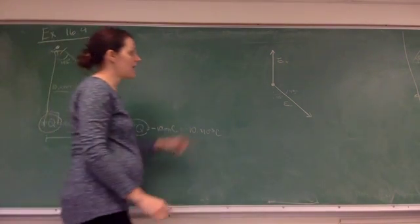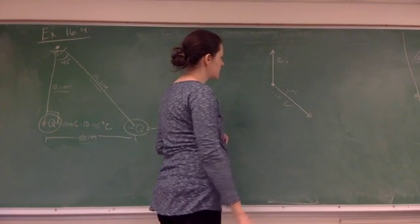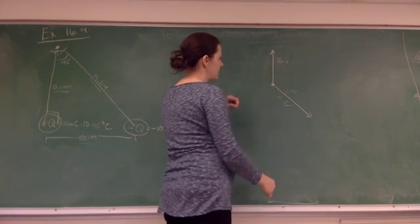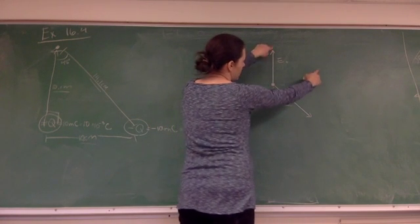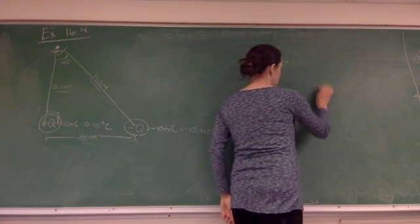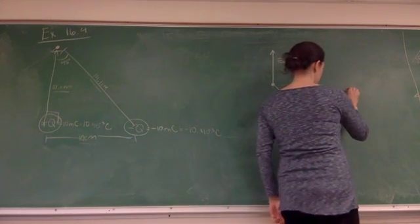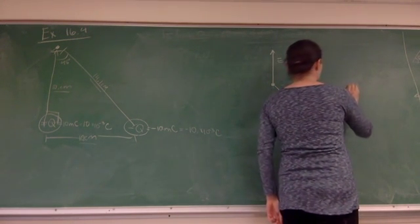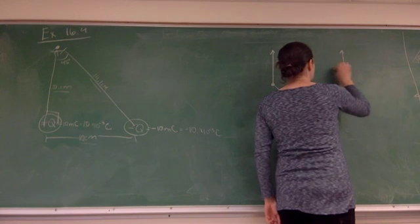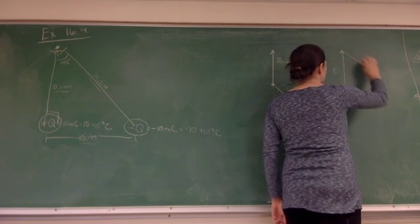In order to have these things add like vectors in a graphical way, we want to add them head to tail. So I'm going to imagine just picking this one up and plopping it over here and redrawing that.